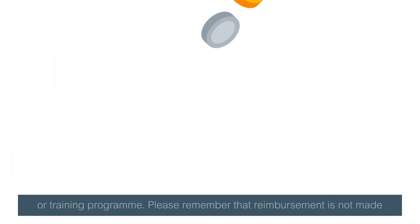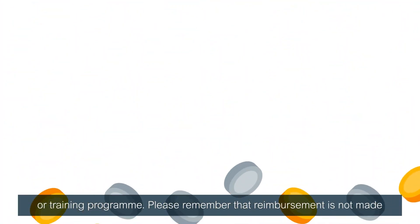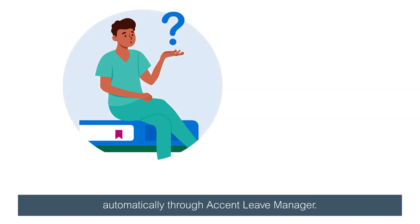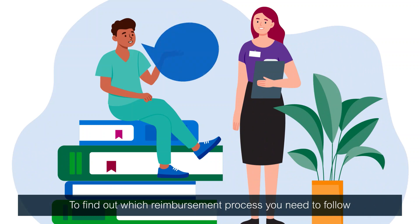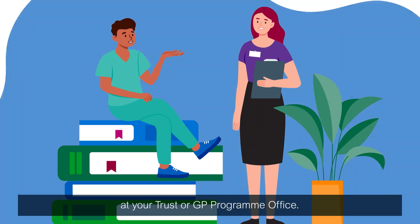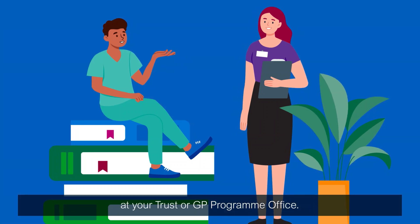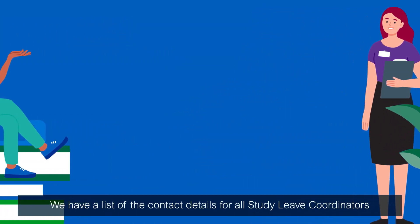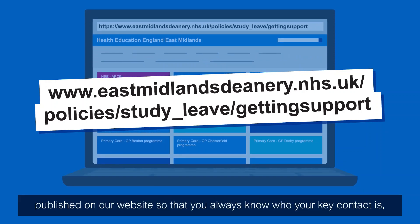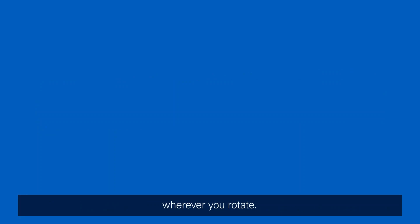Please remember that reimbursement is not made automatically through Accent Leave Manager. To find out which reimbursement process you need to follow, just get in touch with the local study leave coordinator at your trust or GP programme office. We have a list of contact details for all study leave coordinators published on our website, so that you always know who your key contact is wherever you rotate.